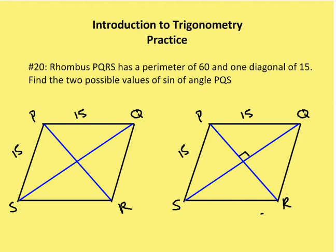First problem: rhombus PQRS has a perimeter of 60 units and one diagonal—we don't know which one, it could be either PR or QS—with a length of 15 units. We need to find the two possible values of the sine of angle PQS.